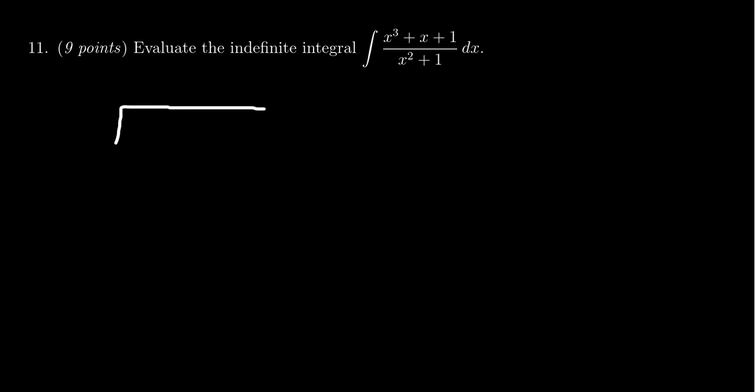If you divide the top, x cubed plus x plus 1, we divide that by x squared plus 1. We're going to first ask ourselves, how many times does x squared go into x cubed? Look at the leading terms there. x cubed over x squared, that gives you an x.